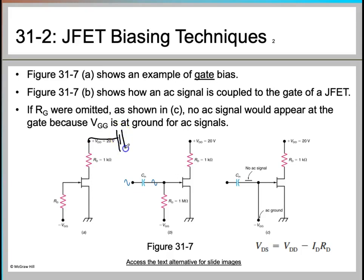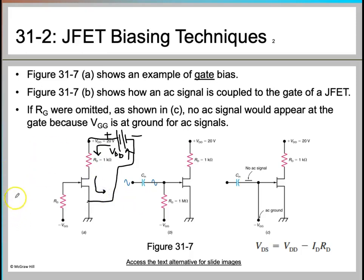The circuit is connected to a battery with positive and negative terminals going to the source. Applying Kirchhoff's Voltage Law, it doesn't matter which convention you choose for current direction — just ensure that the algebraic sum of voltages in the closed circuit equals zero.